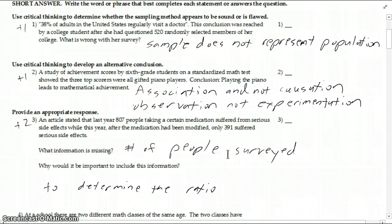Number two, lots of troubles on this one kind of surprised me. An alternative conclusion, it says, playing the piano leads to mathematical achievement. That may be the case, but that can't be proven because this is an observational study. We might have an association between the two. So something in the fact that it's associated, but not causation, or that there might be other factors.